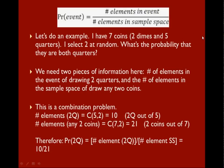Let's do an example. I have 7 coins, 2 dimes and 5 quarters. I select 2 at random. What's the probability that they're both quarters?